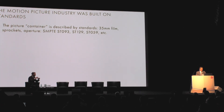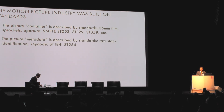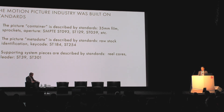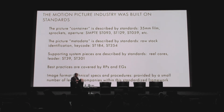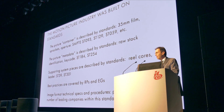Well, the motion picture industry was built on standards. If you think about film as being a container for images — we all think in terms of digital containers — it's described by standards: 35-millimeter film, sprockets, aperture, described by SMPTE standards and ISO standards as well. There's picture metadata in the film system — raw stock identification, key code — also both SMPTE and ISO standards. And then there are supporting pieces for the system: reels, cores, leader. Those are also SMPTE and ISO standards, along with best practices and engineering guidelines described by official published peer-reviewed documents. And the image format technical specs — the actual characteristics of the film themselves — were provided by a small number of leading companies within this standardized framework. The same is true for sound.